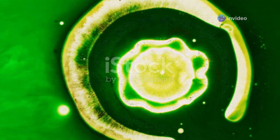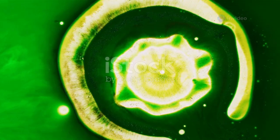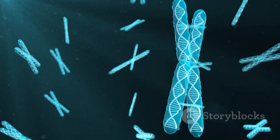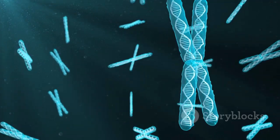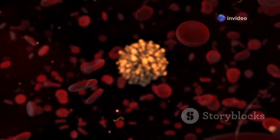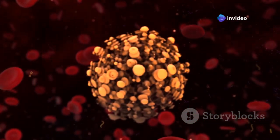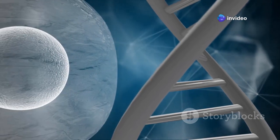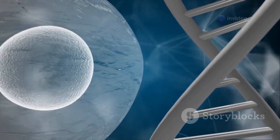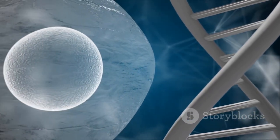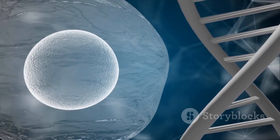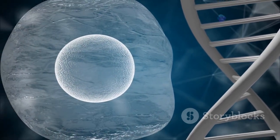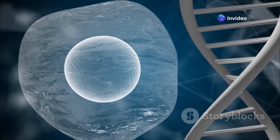Now let's step into the nucleus, the cell's very own command center. This is where you'll find the cell's DNA, neatly packaged into chromosomes. The nucleus acts like a vault, protecting this precious genetic information. It also plays a vital role in controlling cellular activities by regulating gene expression. Think of it as the cell's very own conductor, orchestrating the symphony of life.